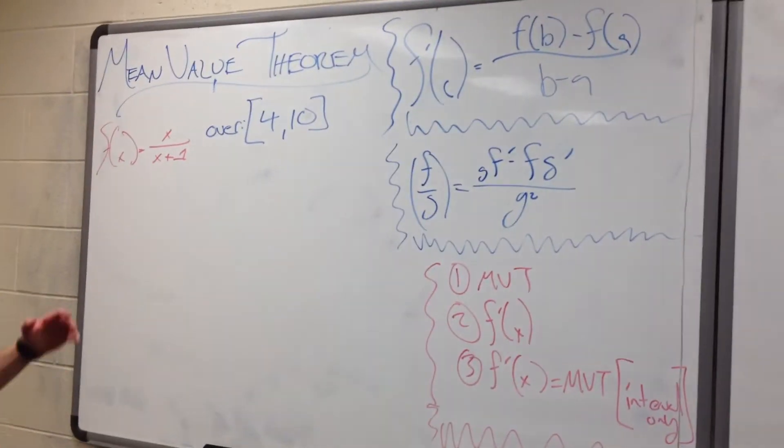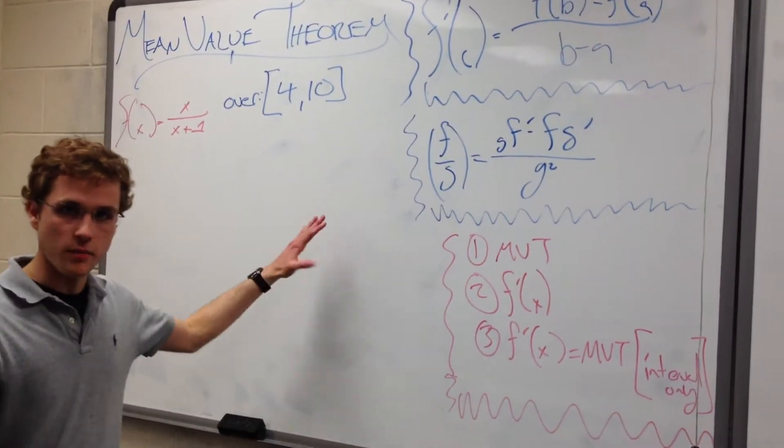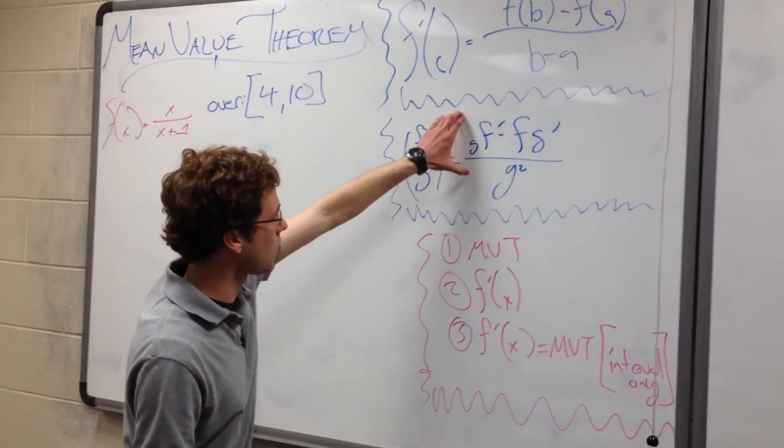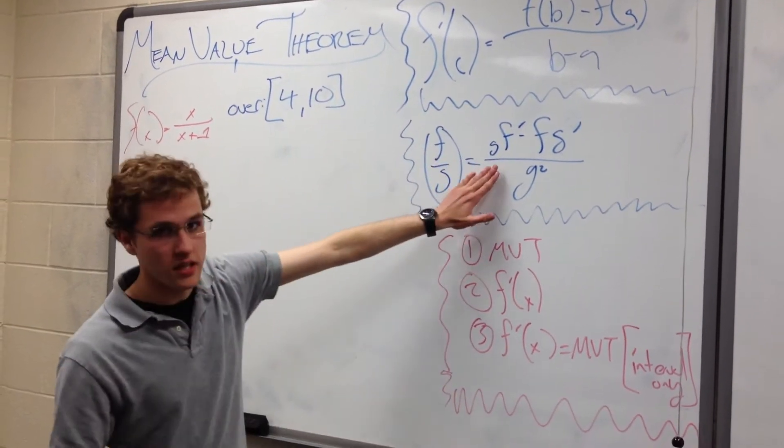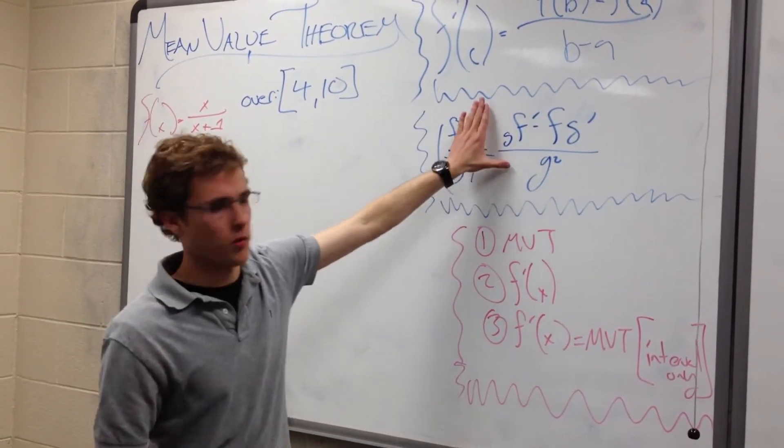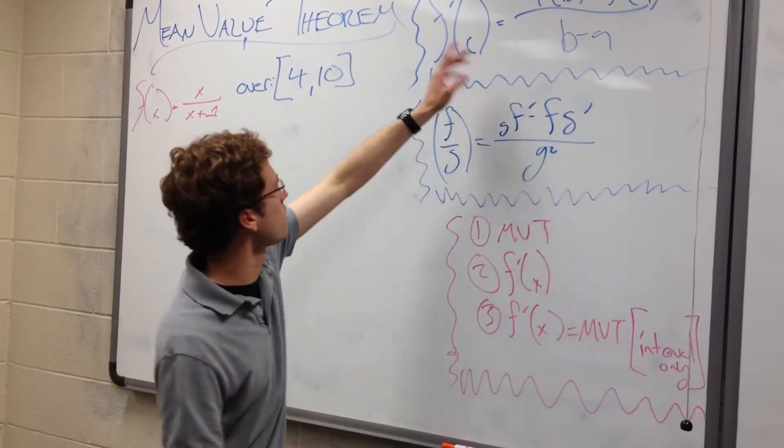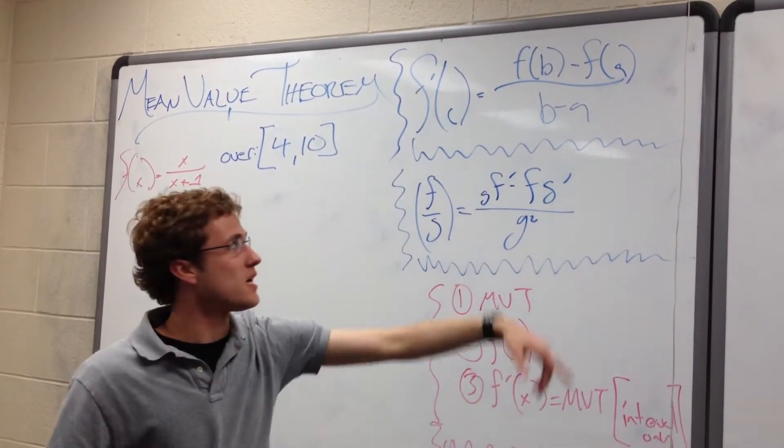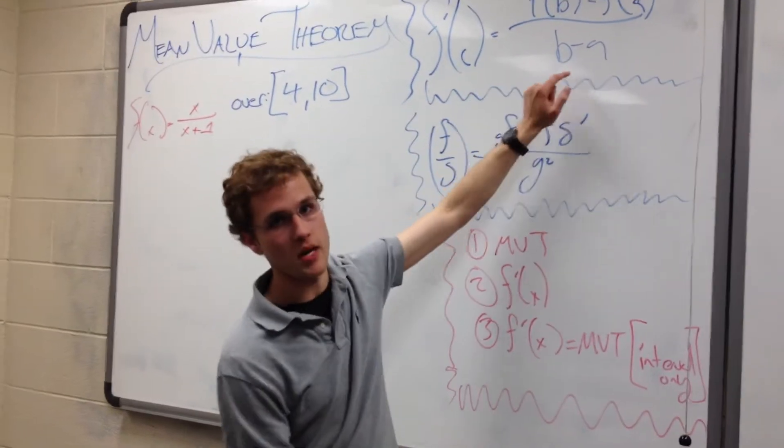Alright, so there are three basic steps to using the mean value theorem to evaluate a function. The first is just use the mean value theorem itself to plug in the appropriate values into this formula. Oh, not this formula. Good grief, this is the quotient rule. Don't listen to me. This formula,